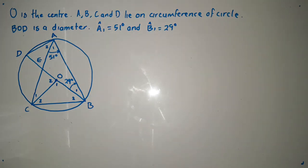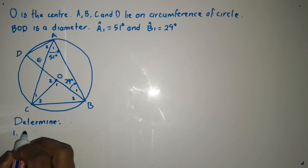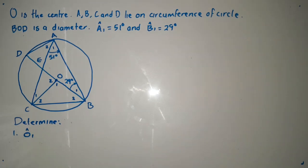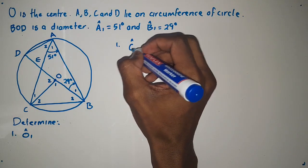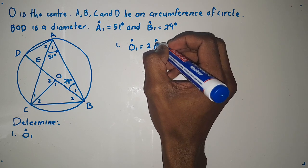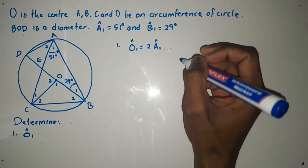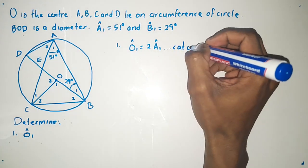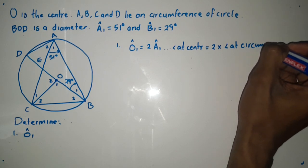Now, if they were to ask us to determine angle O1, how are you going to do that? It's simple — O is the center. For us to find angle O1, we can say angle O1 equals two times angle A1. The reason: the angle at center is equal to two times the angle at circumference.